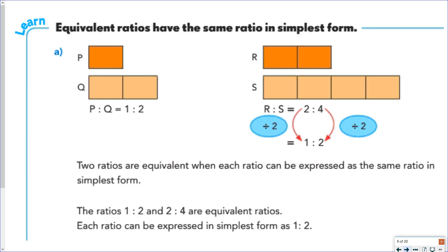Equivalent ratios have the same ratio in simplest form. So you can see here, P to Q has a ratio of 1 to 2, which is simplest form. R to S has a ratio of 2 to 4, but since you can divide both 2 and 4 by 2, you would get that down to 1 to 2. So 1 to 2 and 2 to 4 are equivalent ratios because they can both be expressed as 1 to 2.